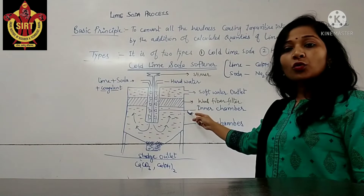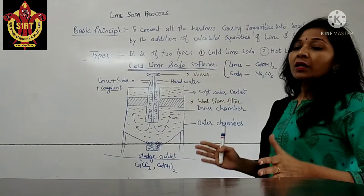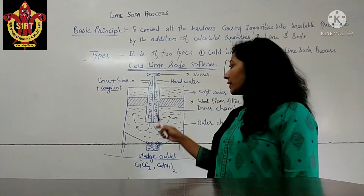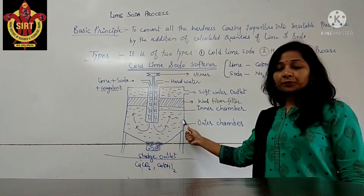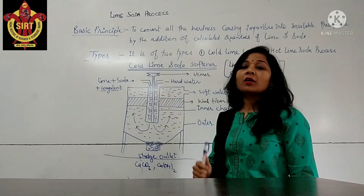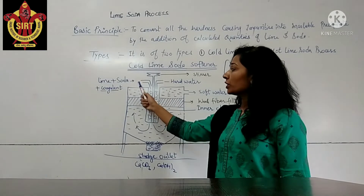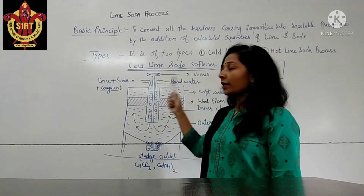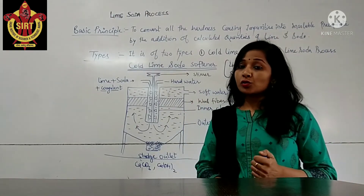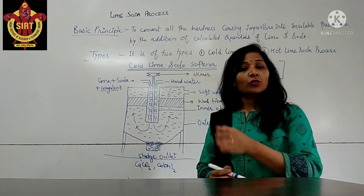Here is the diagram for the cold lime soda softener. Cold lime soda softener is a cylindrical-shaped instrument having two chambers — one is inner chamber and the other is outer chamber. The inner chamber has a mechanically operated or motor-operated stirrer. It also has two inlet valves: one inlet for the addition of lime soda and coagulant, and the other inlet for the addition of hard water. A coagulant is also used here.